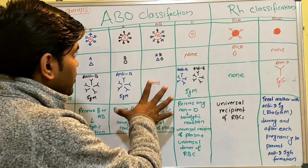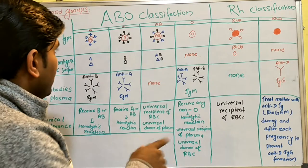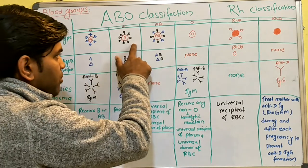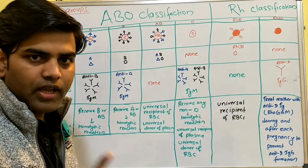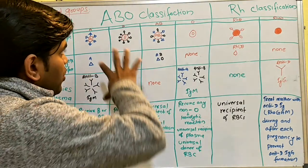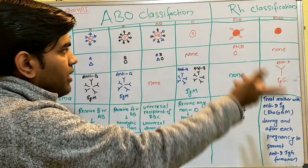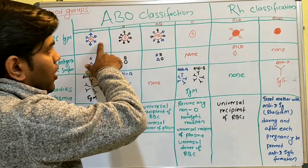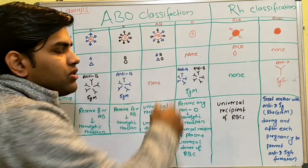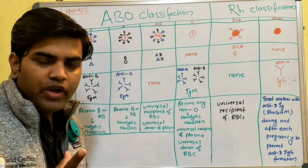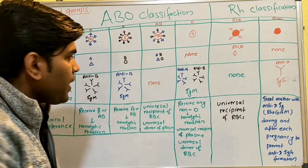In ABO classification, the blood groups are divided into blood group A, blood group B, blood group AB, and blood group O. Among them you can also apply the Rh classification — Rh positive or Rh negative — so you may have A positive or A negative, B positive or B negative, AB positive, or O positive or O negative. This is how we usually deal with blood groups.